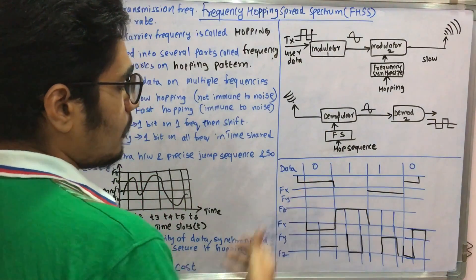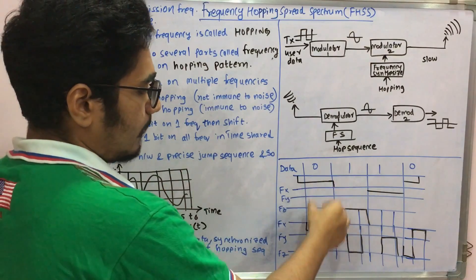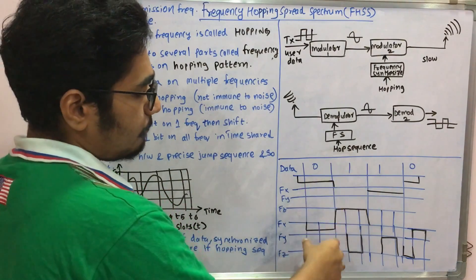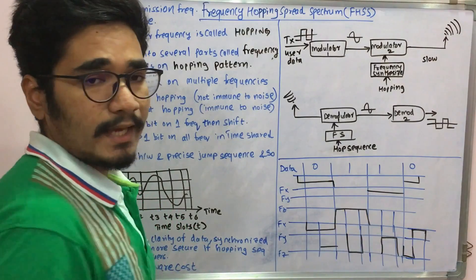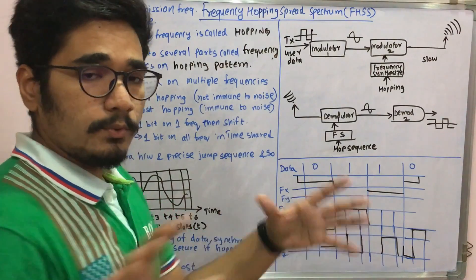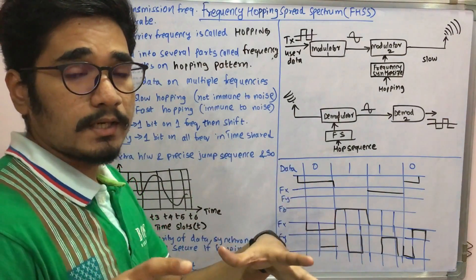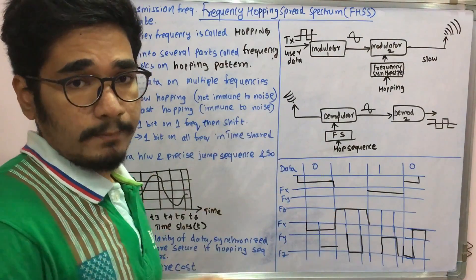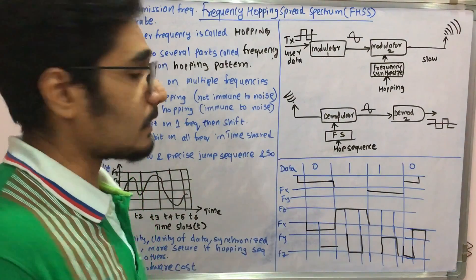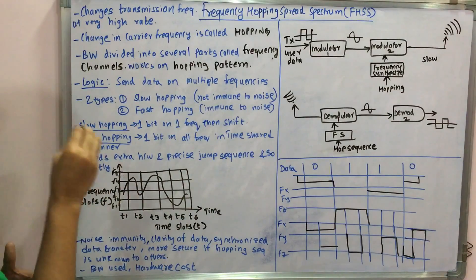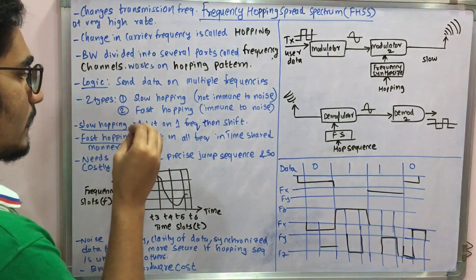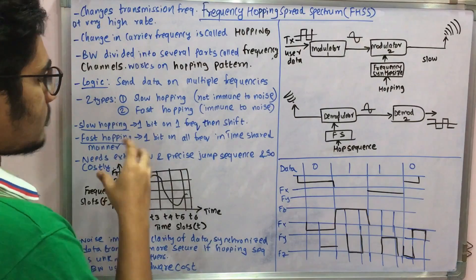But in fast hopping, one bit is kept on one frequency in a time-shared manner so everything happens at a fast rate. It appears to you as a random fashion, but there is a hopping pattern which is agreed by the receiver and transmitter. It needs extra hardware and precise jump sequence, so it's very costly compared to the DSSS technique.